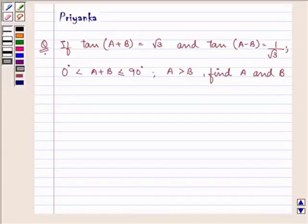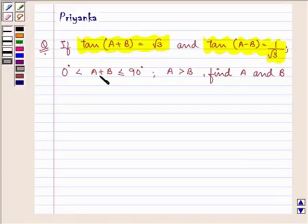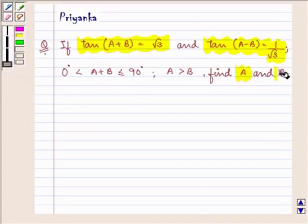Hello friends, how are you all doing today? My name is Priyanka and let us discuss the question. It says if tan(A+B) is equal to root 3 and tan(A-B) is equal to 1 by root 3, 0 < A+B ≤ 90 degrees and A is greater than B, then we need to find A and B.